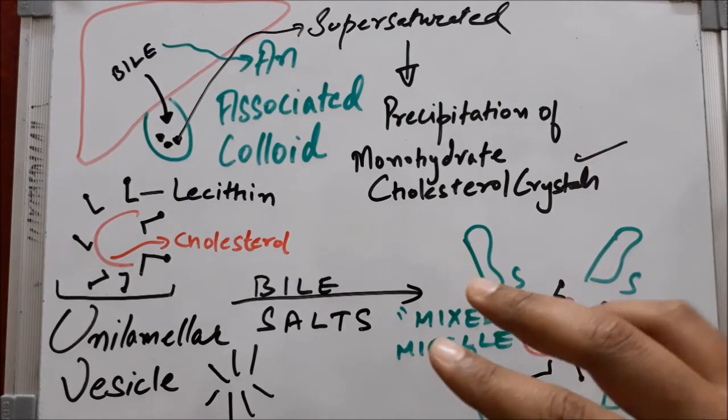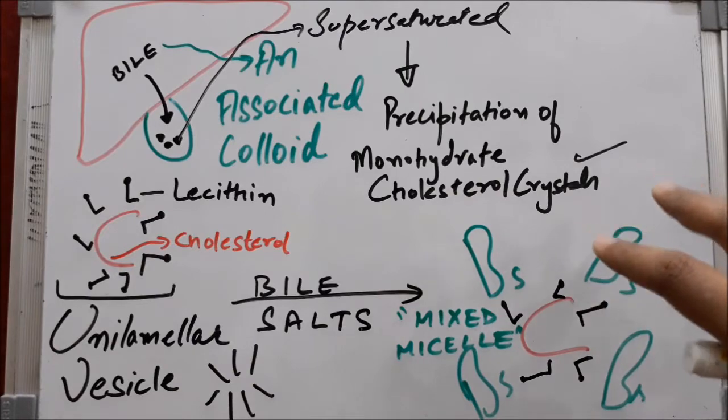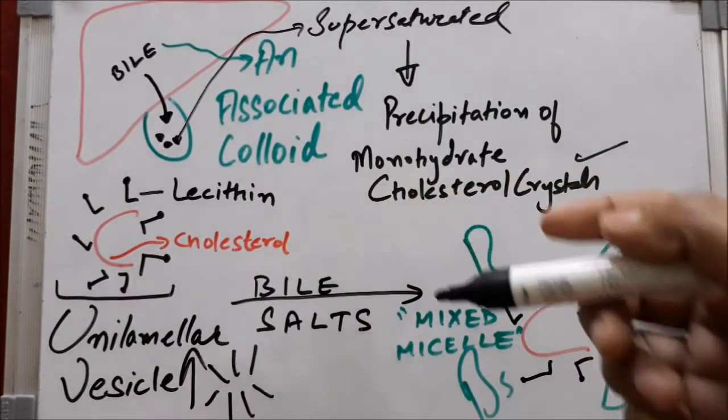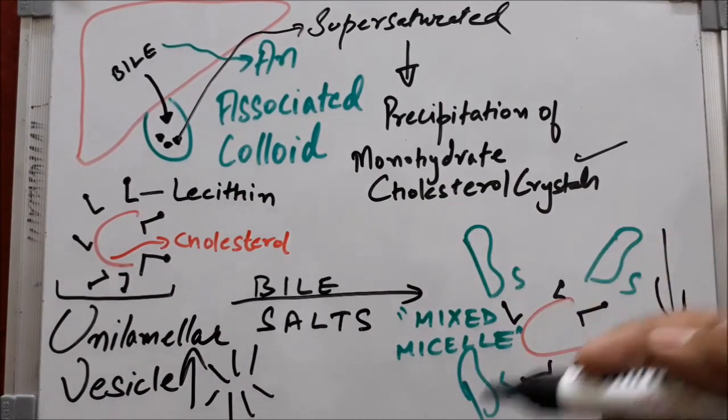So the mixed micelle's cholesterol binding capacity is less, and the unilamellar vesicle's cholesterol binding capacity is more. The important concept is that the mixed micelle equilibrium mixture is more commonly found in the bile and gallbladder...